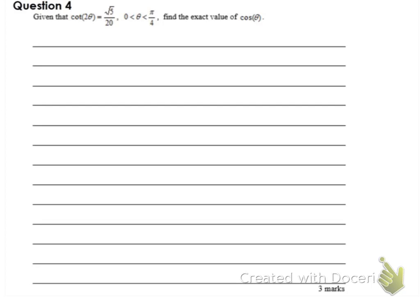Question number four. Given that cot(2θ) = √5/20, and θ is between 0 and π/4, find the exact value of cos θ. What do you think the value of cos θ is? Let's try it.